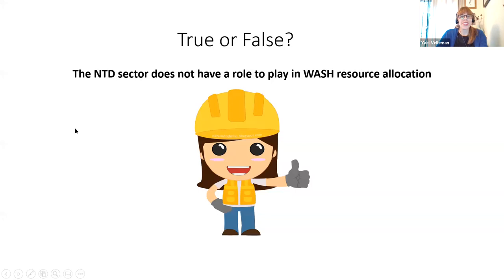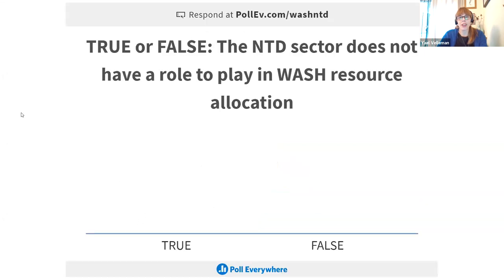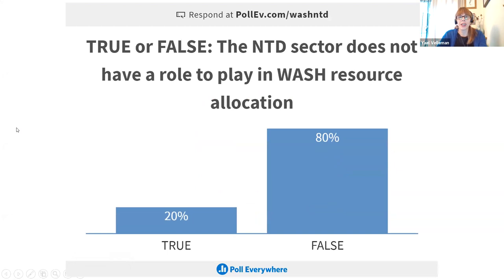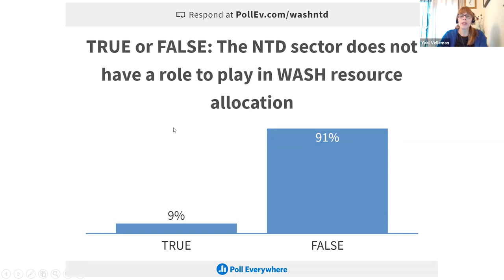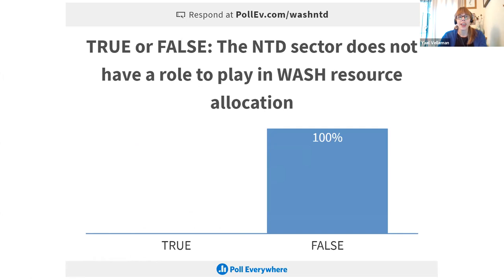For a more controversial question: the neglected tropical disease sector does not have a role to play in WASH resource allocation — true or false? Most of us agree the NTD sector does have a role to play in WASH resource allocation, simply by helping to demonstrate where the burden of disease lies, since people affected by NTDs are also most likely to be excluded from safe water and sanitation services.